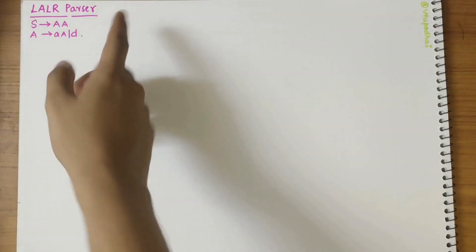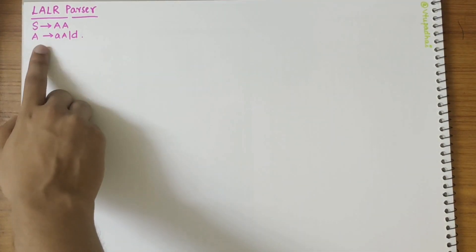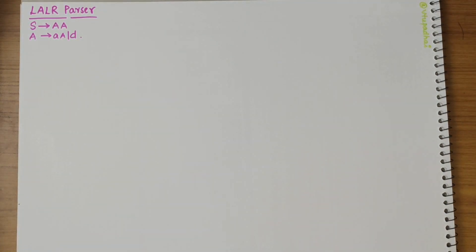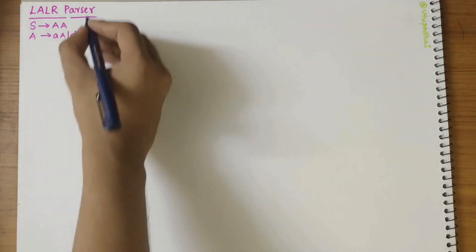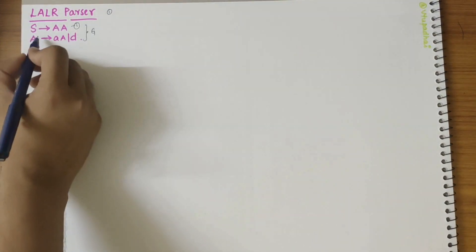In this video, we'll be looking into the LALR parser topic. The grammar is given; we need to construct the LR(1) items along with the LALR parsing table and check if the given grammar is LALR or not. I'll consider this as Grammar G, with productions: S derives AA as the first grammar, A derives AA as the second grammar, and A derives D as the third grammar.